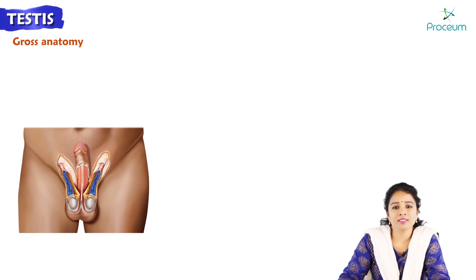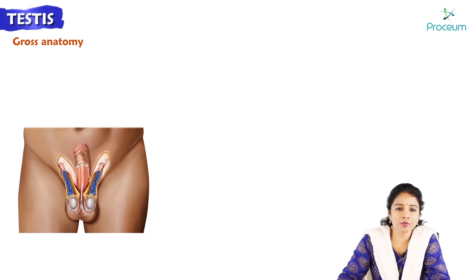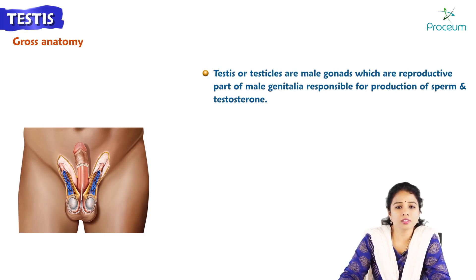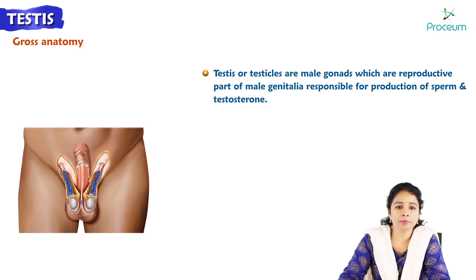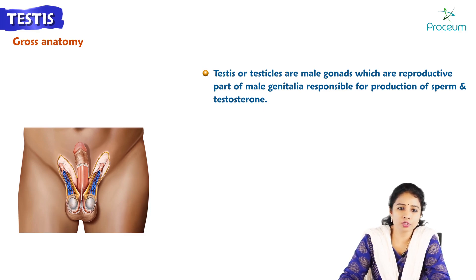Today in this session we will learn about the anatomy of testis. Testis, or the testicles, are the male gonads which are the reproductive part of male genitalia, responsible for the production of sperm and testosterone.